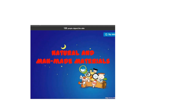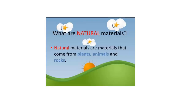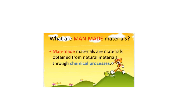Natural and man-made materials. What are natural materials? Natural materials are materials that come from plants, animals and rocks. What are man-made materials? Man-made materials are materials obtained from natural materials through a chemical process.